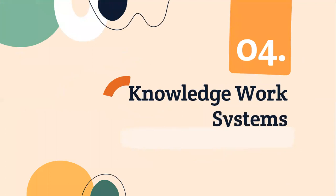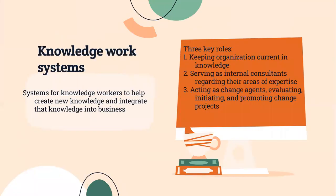The last learning objective is Knowledge Work Systems. A Knowledge Work System is a system for knowledge workers to help create new knowledge and integrate that knowledge into businesses. Knowledge workers include researchers, designers, architects, scientists, and engineers who create knowledge for the organization. There are three key roles: keeping organizations current in knowledge, serving as internal consultants regarding their areas of expertise, and acting as change agents — evaluating, initiating, and promoting change projects.